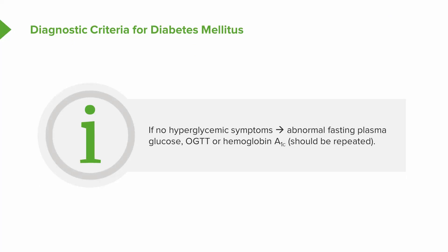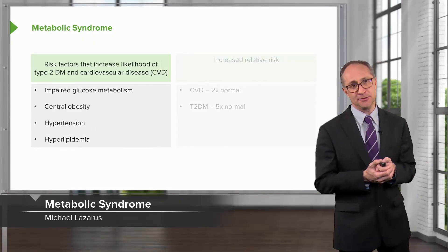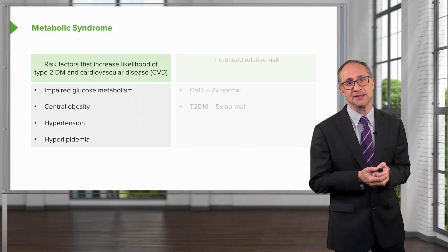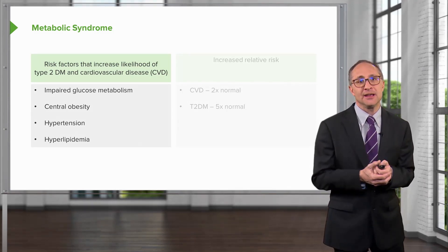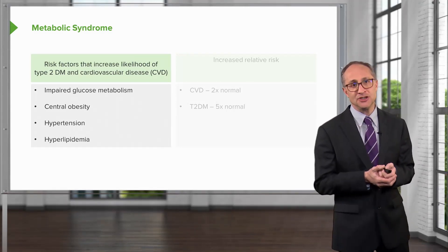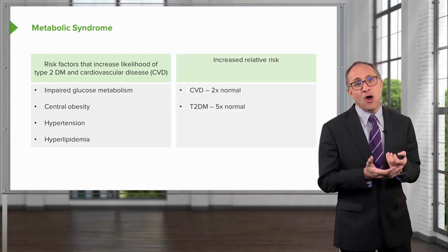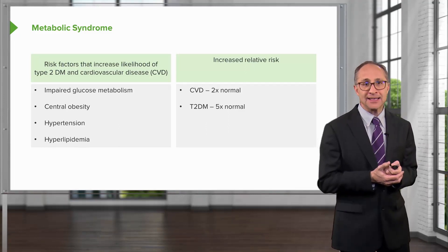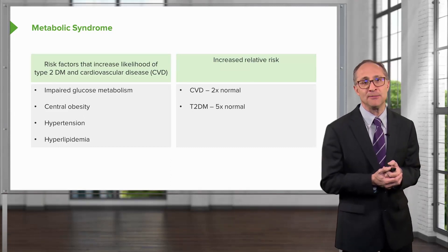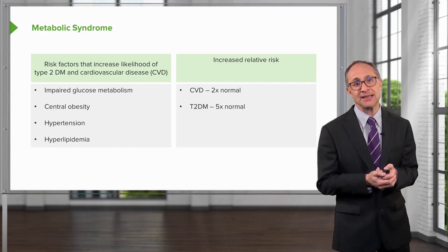In the absence of hyperglycemic symptoms, an abnormal fasting plasma glucose, an abnormal oral glucose tolerance test, or hemoglobin A1c should be confirmed by repeated testing. The metabolic syndrome is a group of risk factors that increase the probability of developing type 2 diabetes mellitus and cardiovascular disease, resulting in impaired glucose metabolism, central body obesity, hypertension, and hyperlipidemia. The risk for cardiovascular disease is two times normal, and the risk for developing overt diabetes is five times normal.